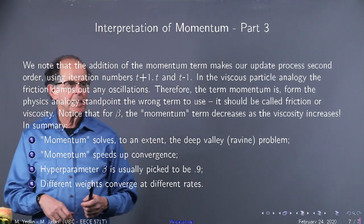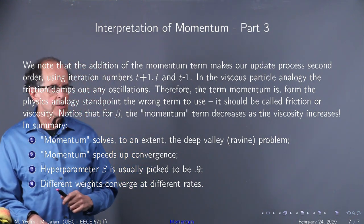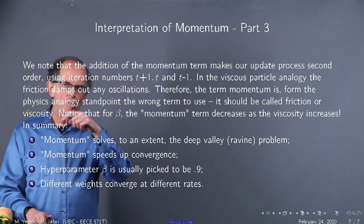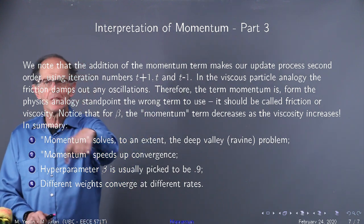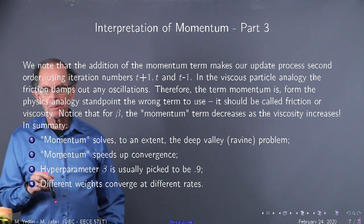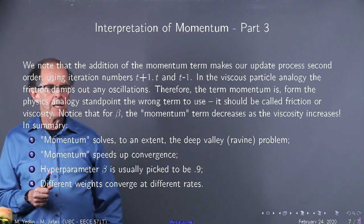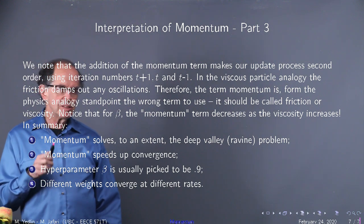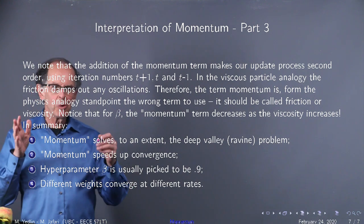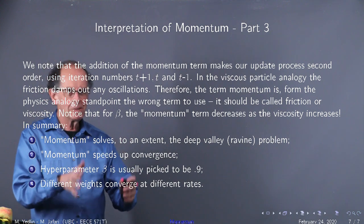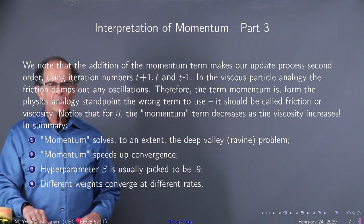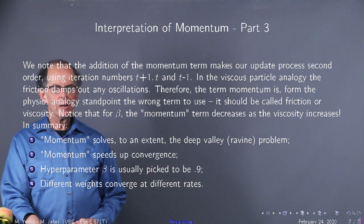And here's a summary slide of what I said. The main results are that momentum solves, to an extent, the deep valley problem. It's going to speed up convergence because it reduces the number of oscillations due to the viscosity. Hyperparameter beta, hyperparameter referring to a tuning parameter, is usually picked to be 0.9. Different weights converge at different rates. That's another, a little graphic, a little poem. Weights, rates. Different weights converge at different rates. That's something very important to remember. Finally, momentum's the wrong term to use. It should be called, you guessed it, friction or viscosity.